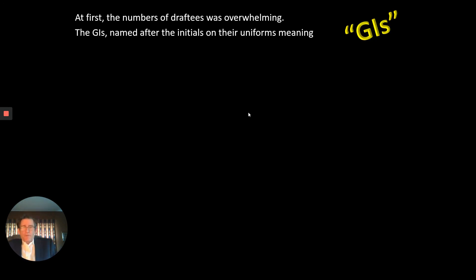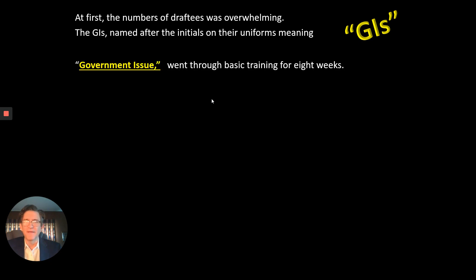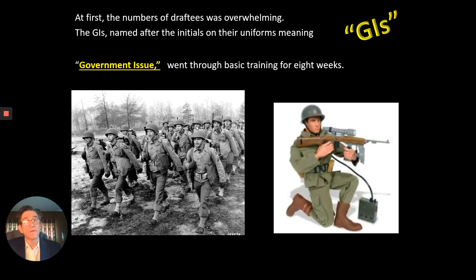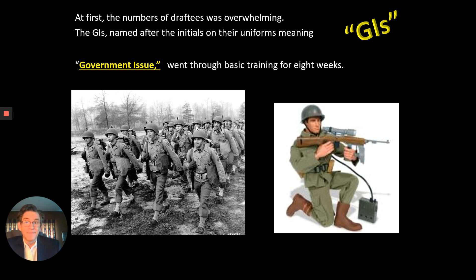Some of you played with G.I. Joes growing up. The G.I. in G.I. Joe stands for Government Issue—the two words placed on all uniforms soldiers received when they went to their first training. These men basically went from being a farmer or a car mechanic to having to be trained to find, fix, and kill other men. They had to go through eight weeks of basic training.